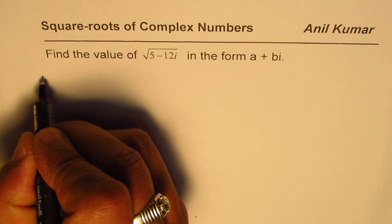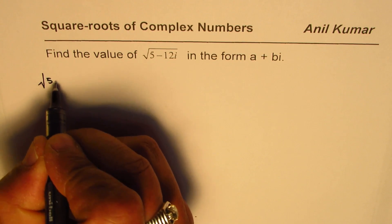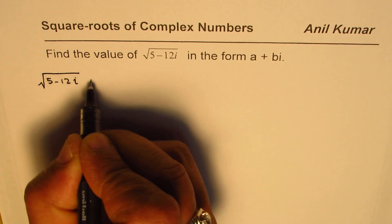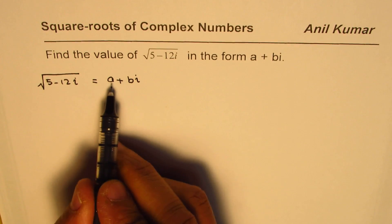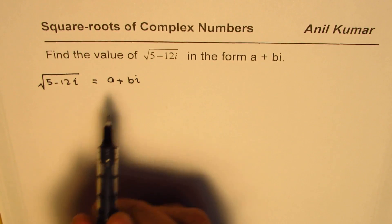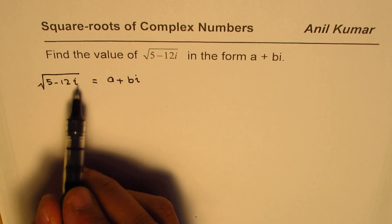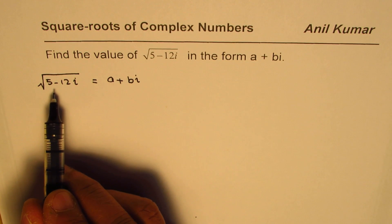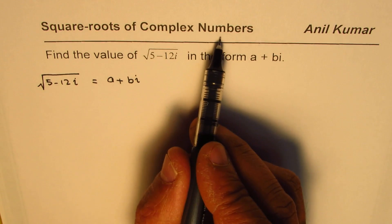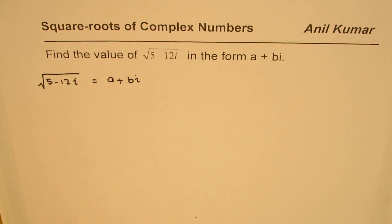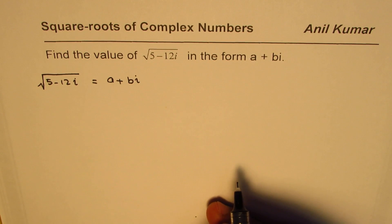If we write square root of 5 minus 12i as equal to a plus bi, to get the values of a and b, we can square the left hand side and equate the two. Two complex numbers are equal when their real parts are equal and when their imaginary parts are equal. So we are going to compare their real and imaginary parts to get the solution.